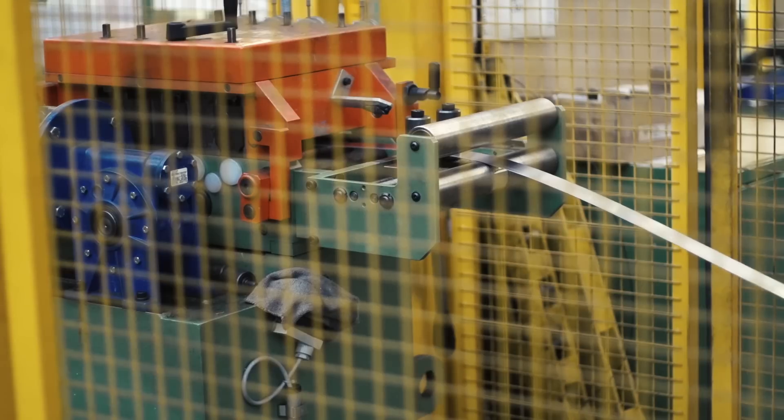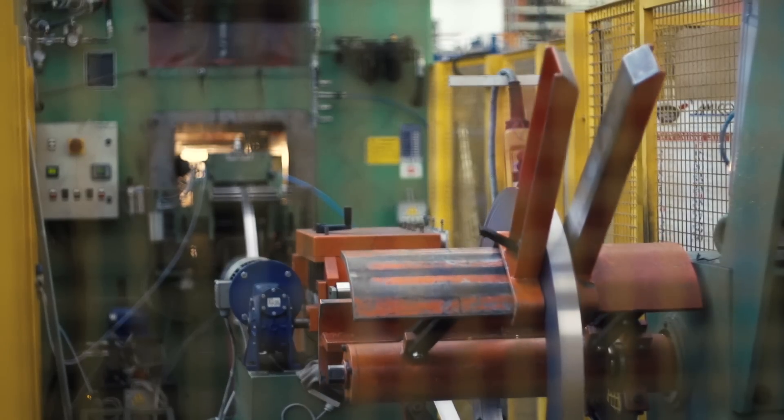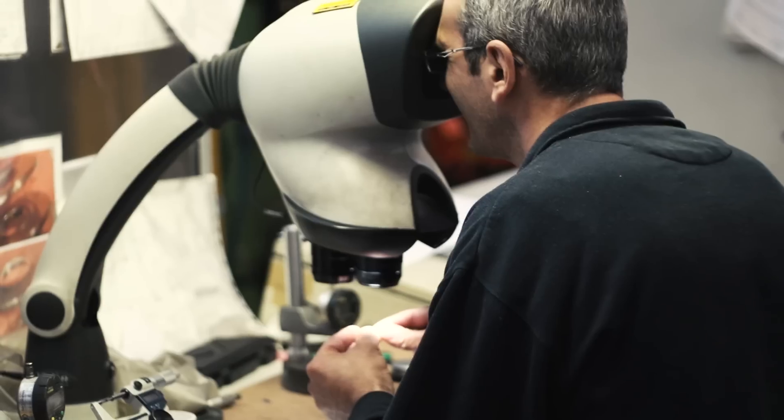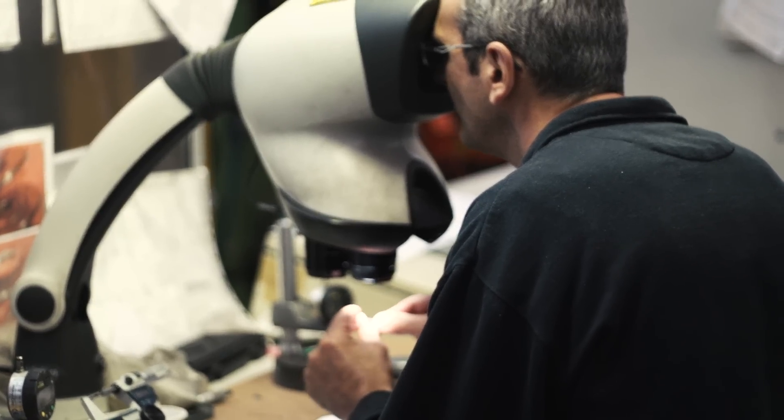The life of a Campagnolo chain begins as a long steel metal reel. After each stage of the manufacturing process, individual links are hand checked to ensure the finished product is of the highest quality.